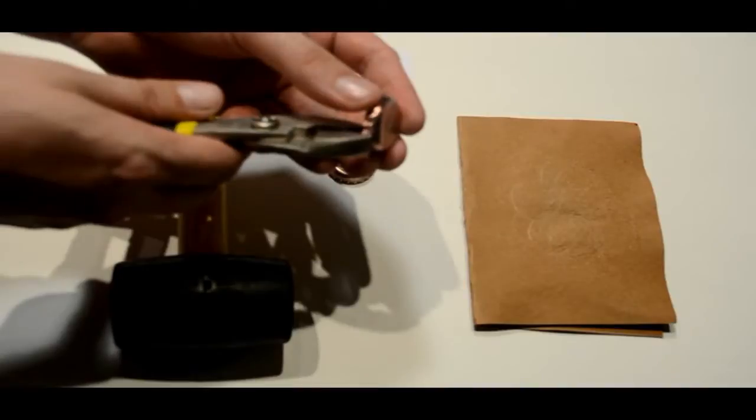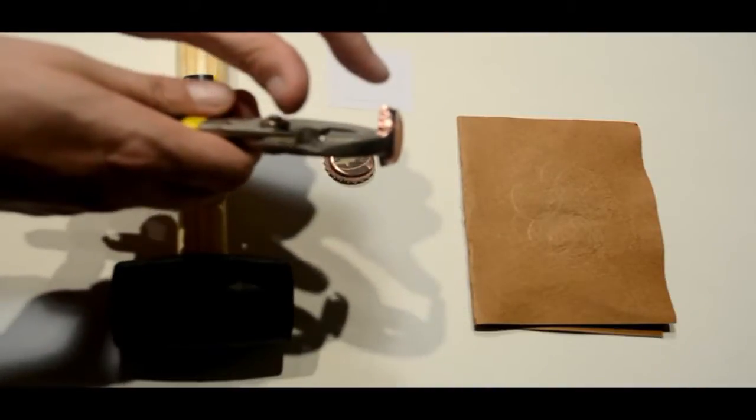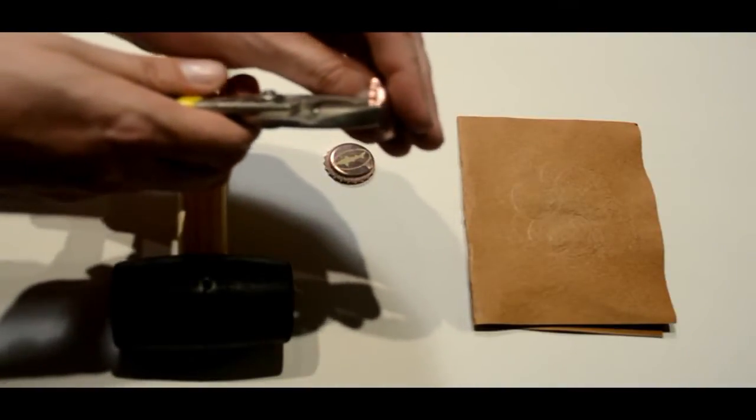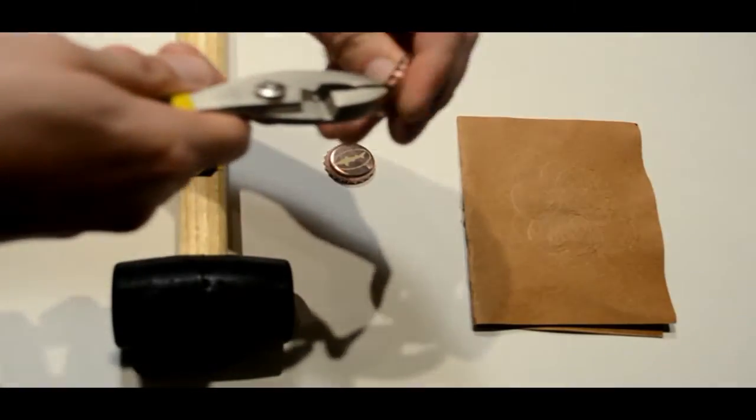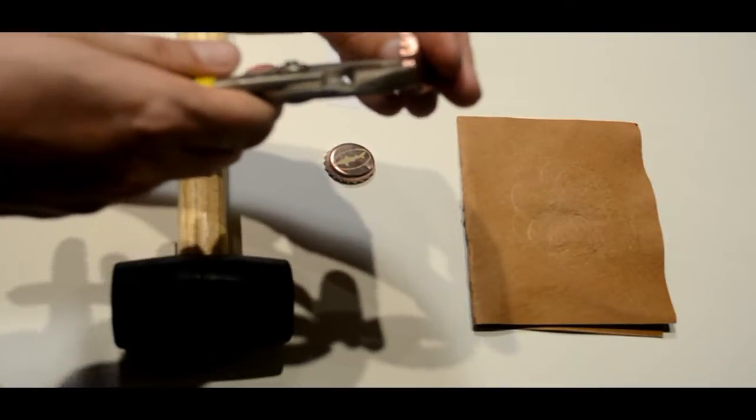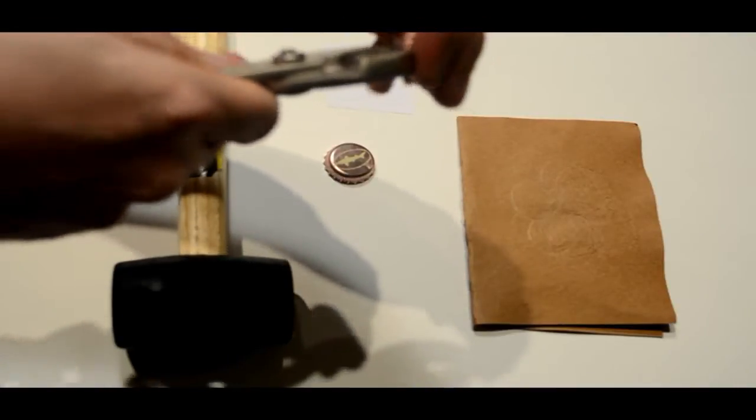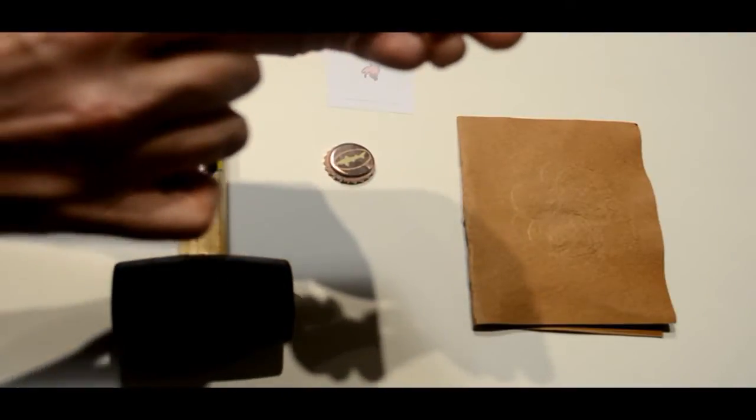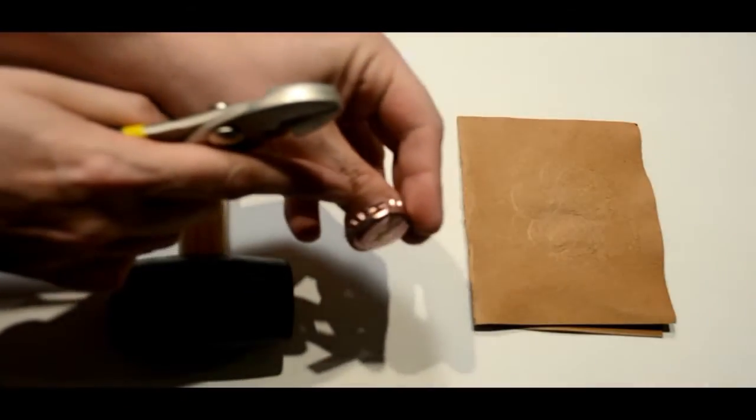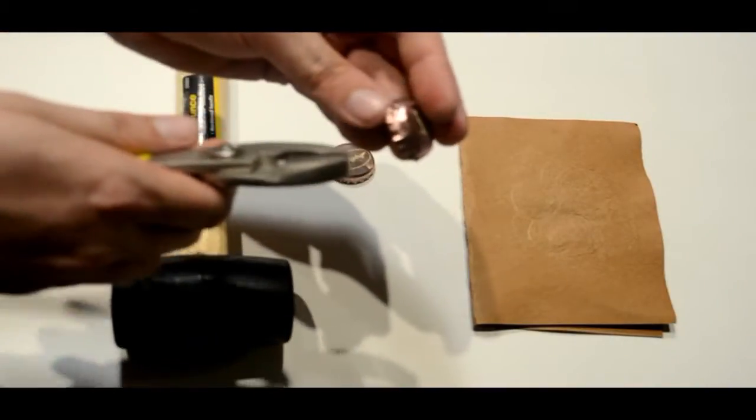You'll begin by bending the edges of the bottle cap upward with the pair of pliers. Making sure the edges are bent evenly all the way around.